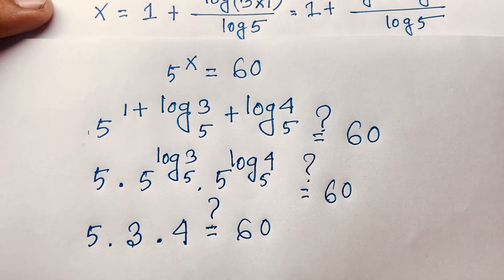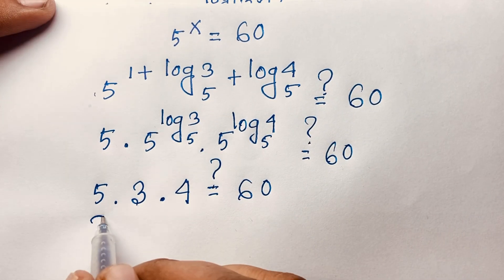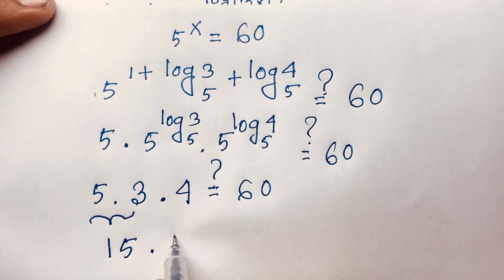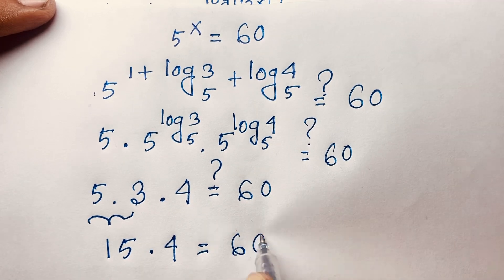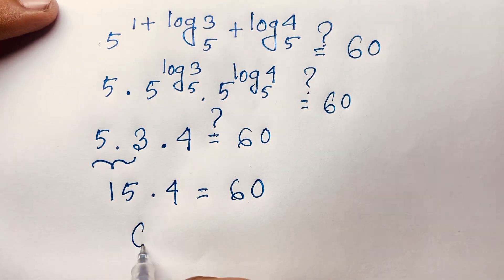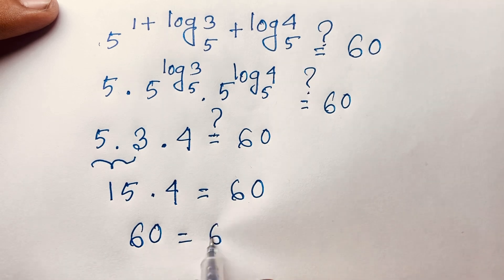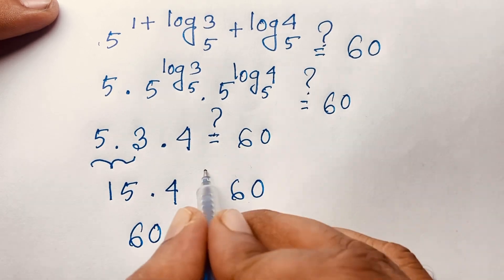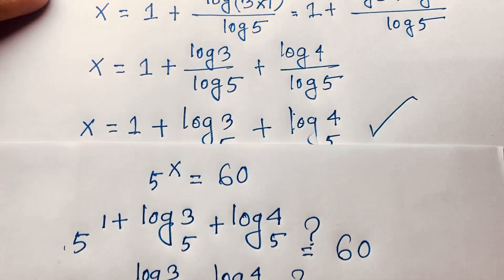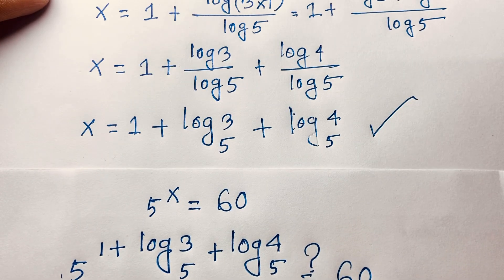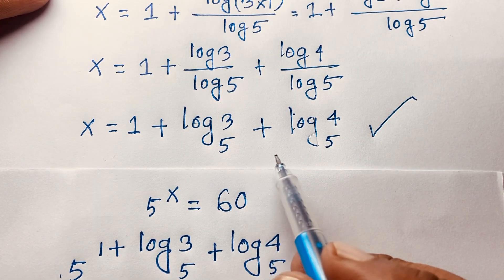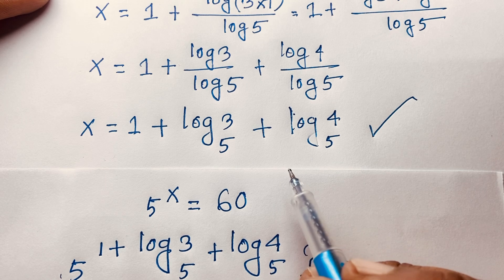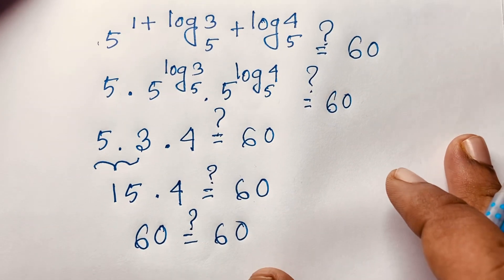I can see 5 times 5 to the power log 3 base 5 is 3, and 5 to the power log 4 base 5 is 4. So it will be 5 times 3 times 4, which is 15 times 4 is equal to 60. Then it will be 60 is equal to 60, because 4 times 15 is equal to 60. So x is equal to 1 plus log 3 base 5 plus log 4 base 5 is our final answer in this Master Olympiad question. Thank you all.